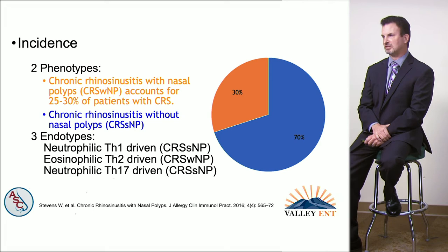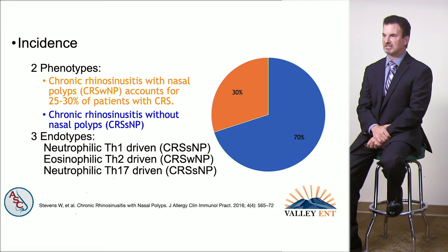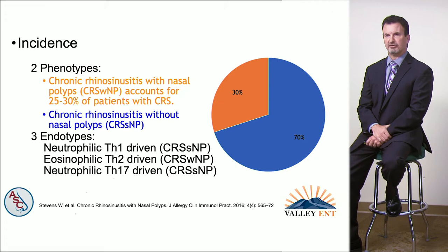In terms of chronic rhinosinusitis there are three endotypes, dictated by the T helper cell. We have Th1-driven, which is neutrophilic and without polyps; Th2-driven, which is eosinophilic inflammation and primarily associated with polyps; and a less common form, Th17, which is again neutrophilic and without polyps.